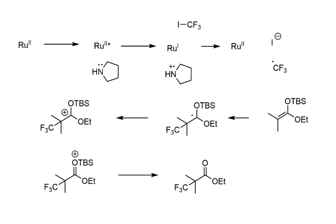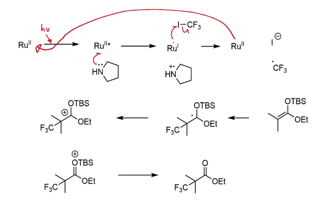Here is my interpretation of what's going on in this photoredox cycle. When irradiated with visible light, Ru(II) is excited to the Ru(II)* excited state — a charge-separated state that is paradoxically both a strong oxidant and a strong reductant. Pyrrolidine in the reaction mixture undergoes single-electron oxidation by Ru(II)*, generating a pyrrolidine radical cation and Ru(I). Ru(I) is a strong reductant and donates an electron into the C–I bond of trifluoromethyl iodide, re-oxidizing itself to Ru(II) to restart the catalytic cycle.